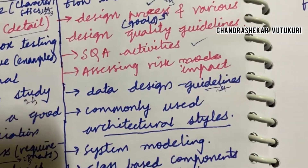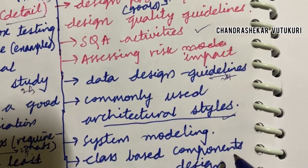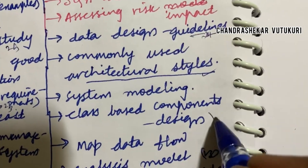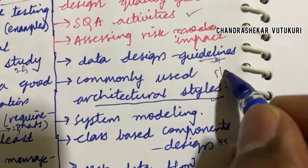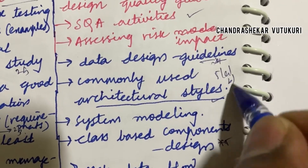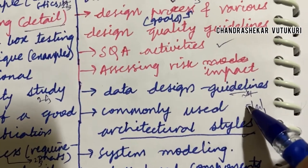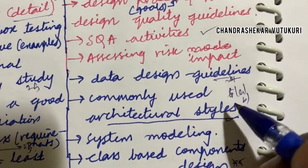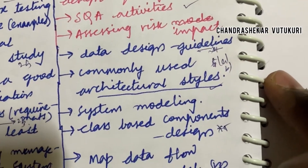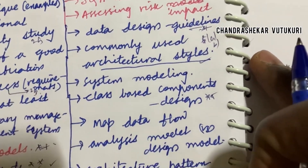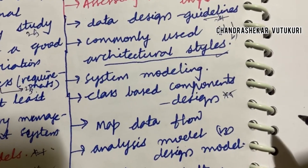SQA activities, assessing risk, mode impact, data design and guidelines may also be top most questions. Commonly used architecture styles, system modeling, case-based components — study these for 5A as well as 5B. Do not skip — sorry — 6A as well as 6B. Do not skip any part of the questions I have highlighted here, as this tool and its structure will be asked anywhere.